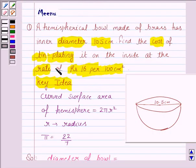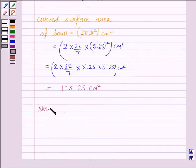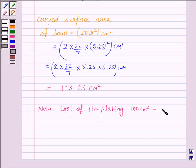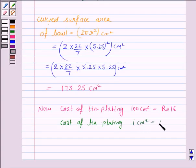Now we are given the cost of tin plating at the rate of rupees 16 per 100 cm square. Now cost of tin plating per 100 cm square is rupees 16. So the cost of tin plating the area of 1 cm square is rupees 16 upon 100.